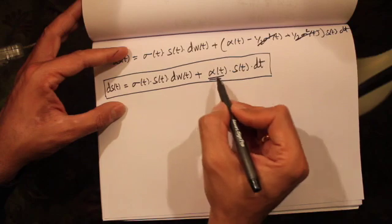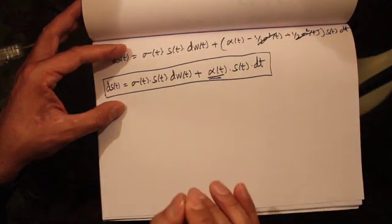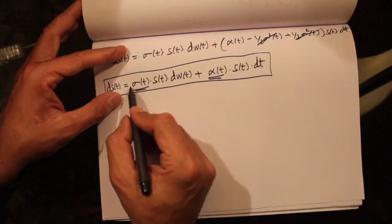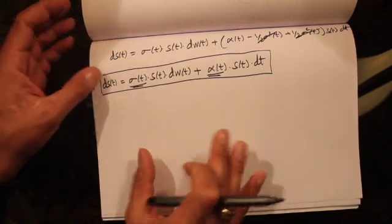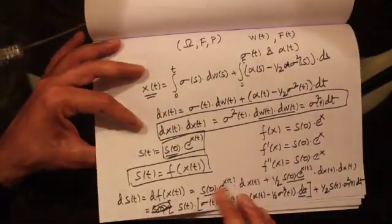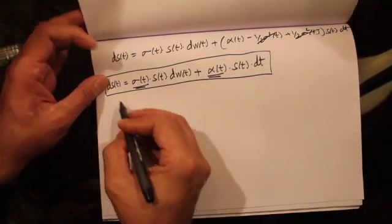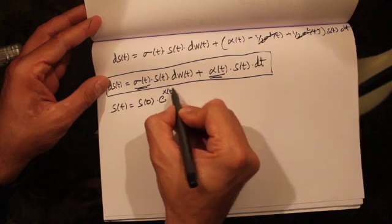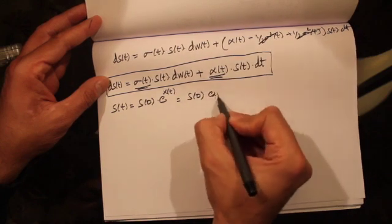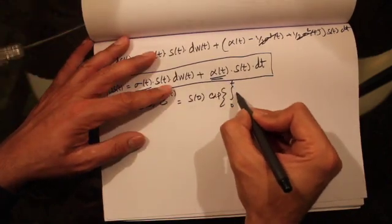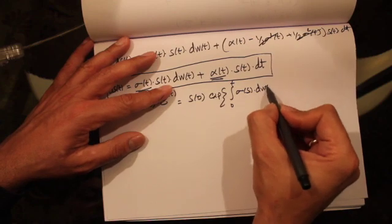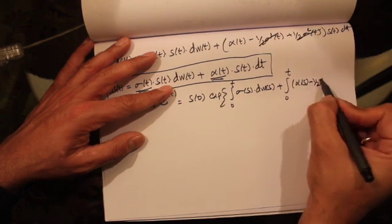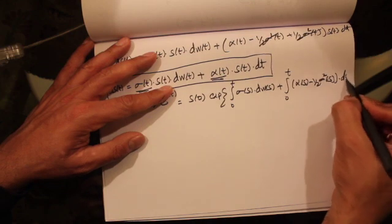Here, alpha(t) is called the instantaneous mean rate of return, or drift term, and sigma(t) is called the volatility. The stock price S(t) = S₀ · e^{X(t)}, where X(t) = integral from 0 to t of sigma(s) dW(s) plus integral from 0 to t of [alpha(s) − one-half sigma squared(s)] ds.